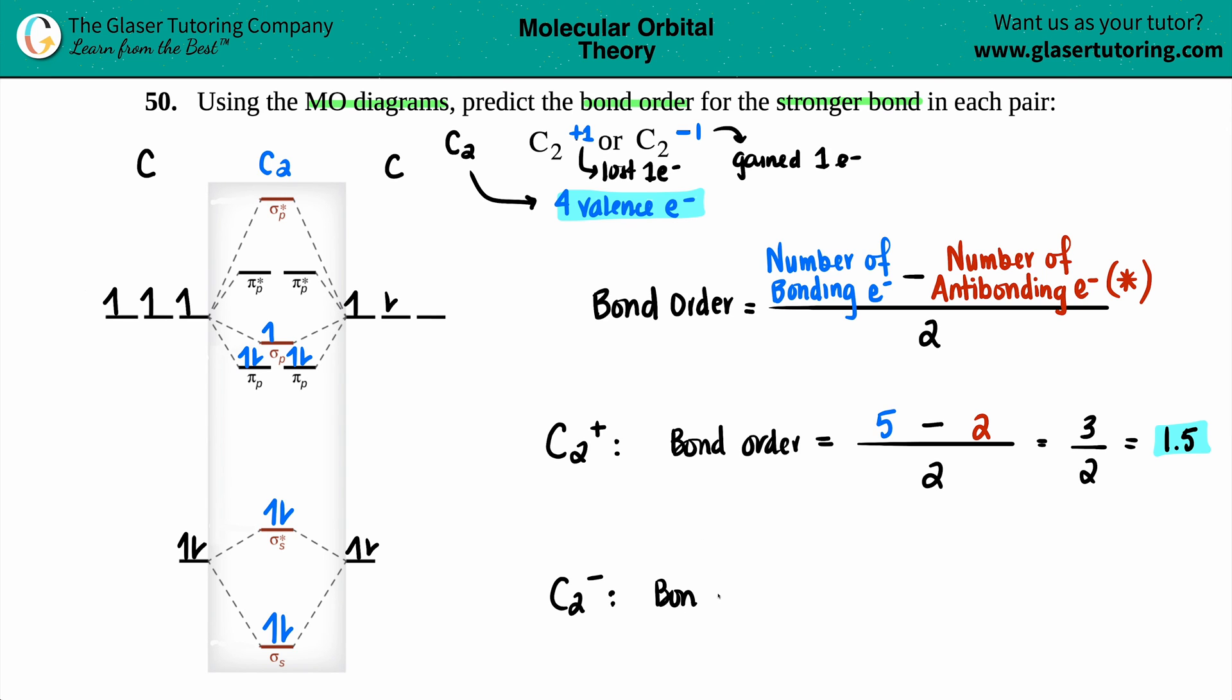Now we can see the new bond order. We added a bonding electron. Something minus something divided by two. Looks like I didn't change my antibonding. This is still all zero and there's only two here. So two. And now I added one. So this is now, let's see, two, four, five, six, seven. So now I have a seven. And does that match? Yes, that does. Let's just do the math here. Seven minus two is five. Five divided by two is 2.5. So 2.5 is on the cusp of two and three. So that's a double and a triple bond.